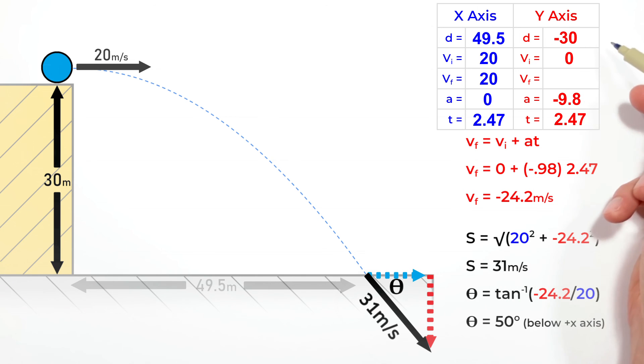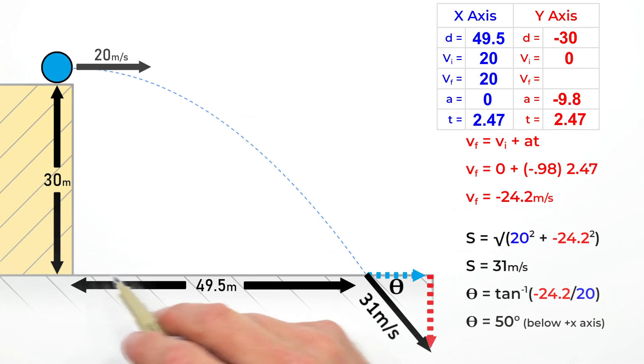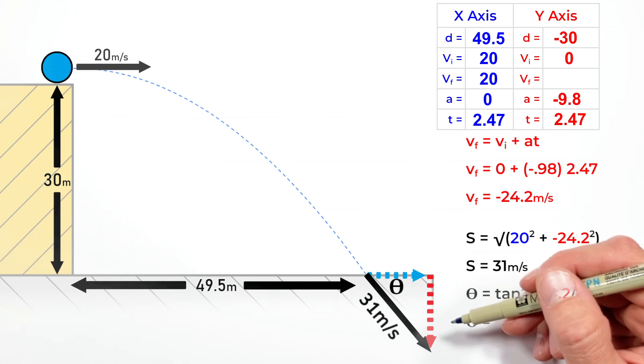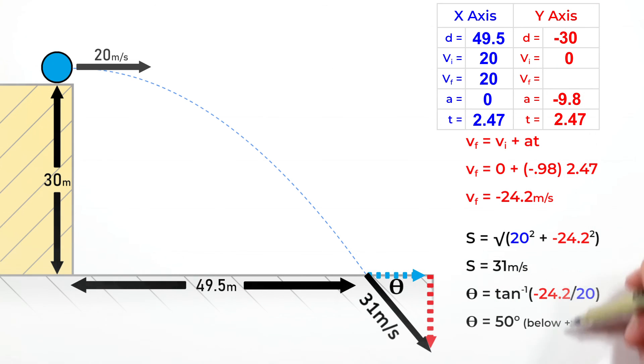So there it is - how to use the kinematic equations to solve for both the horizontal range and the final speed and direction of a projectile. I hope you found this useful, and on that note, that's all for now.